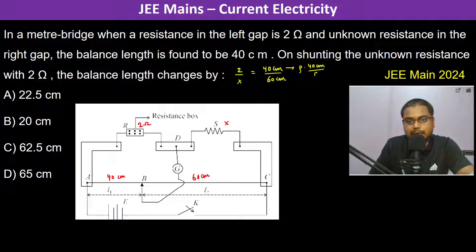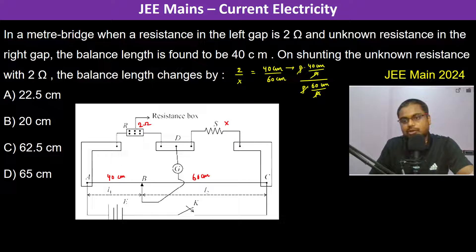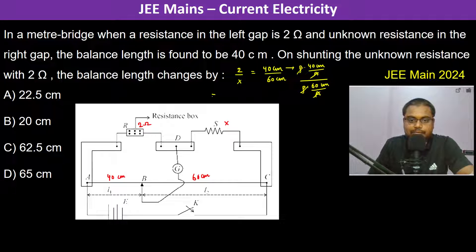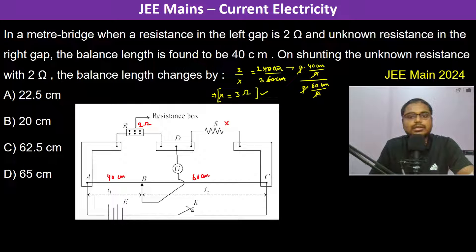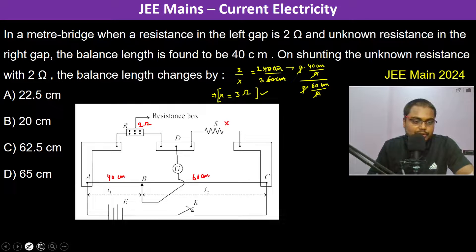...or ρ into 60 centimeter divided by a, because it gets canceled. So therefore we write directly l1 by l2. So therefore we can clearly see that x is equal to - this is 2, this is 3, so x is actually 3 ohms.